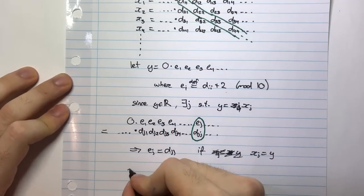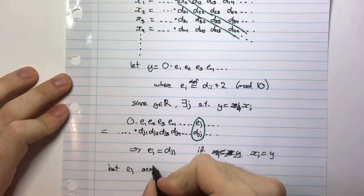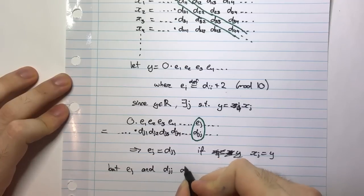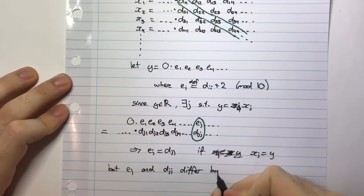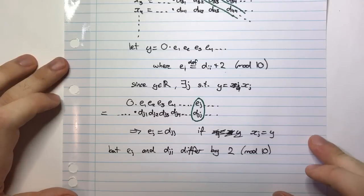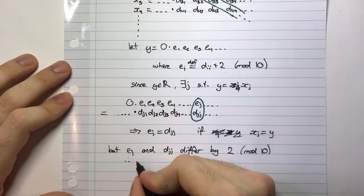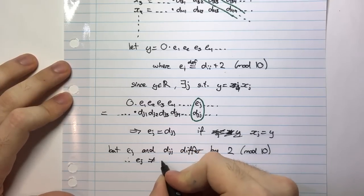then I can say that EJ and DJJ differ by 2 mod 10. So if they differ by 2 mod 10, then they can't be the same. So therefore, EJ is not equal to DJJ.